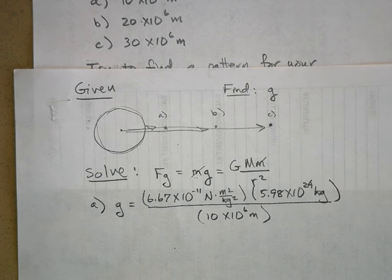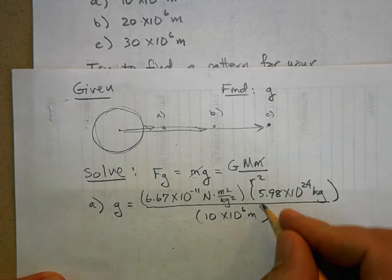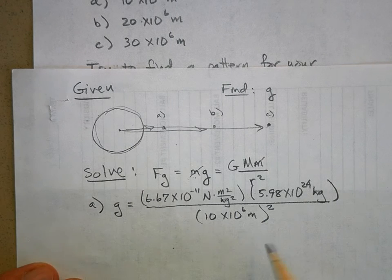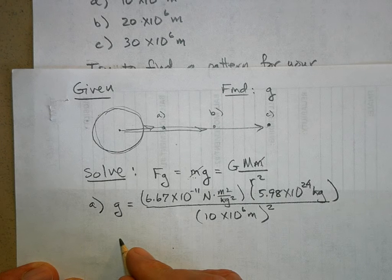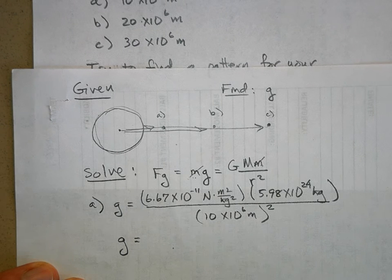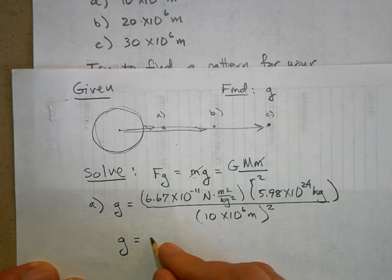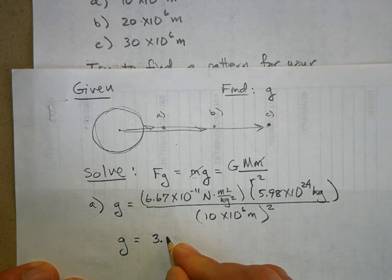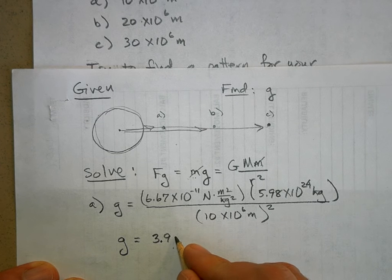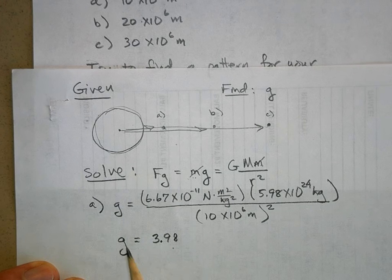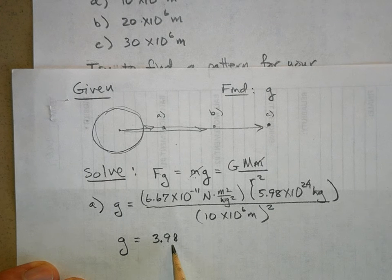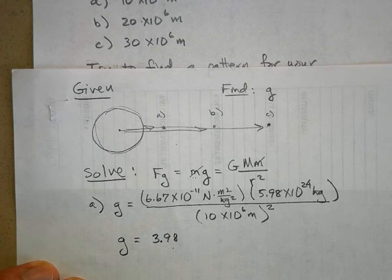So you get a calculator and you crank through all those numbers. Make sure you square that. What was your answer for part A? 3.98.